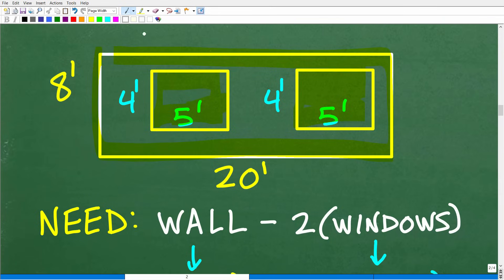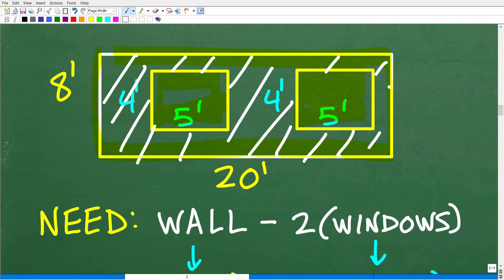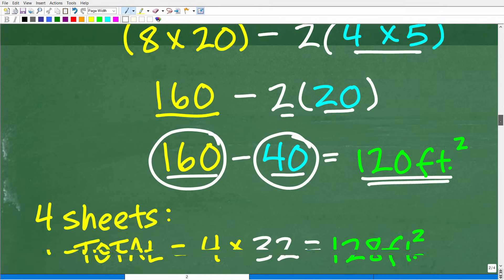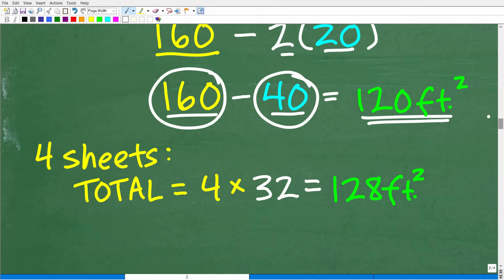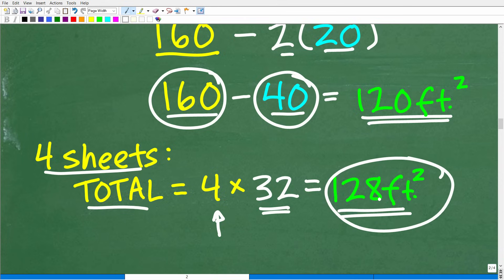Okay, so in other words, to do the entire job but not counting those window areas because, of course, we don't want to put drywall over our windows. That's not a good thing. So that's what the job would require, 120 square feet. And we know already that our four sheets of drywall gives us a total of 128 square feet. So you can see we will have 8 square foot left after we do this job.